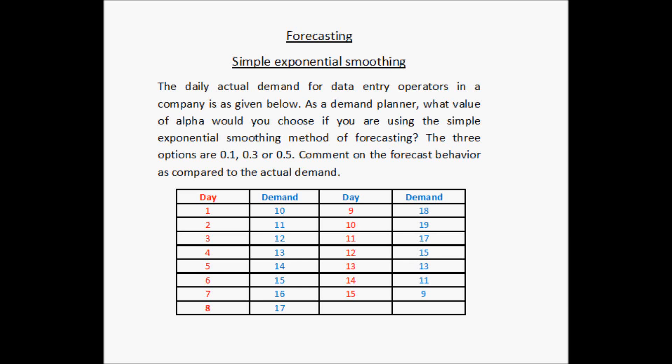Welcome to another example of forecasting using the simple exponential smoothing method. The daily actual demand for data entry operators in a company is given below. As a demand planner, what value of alpha would you choose if you are using the simple exponential smoothing method? The three options for alpha are 0.1, 0.3, or 0.5. Also, comment on the forecast behavior as compared to the actual demand.